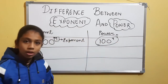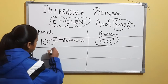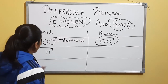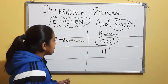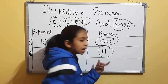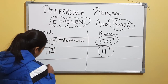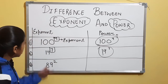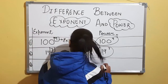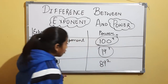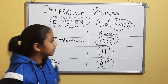Second example: 14 raised to the power 7. What is the exponent? The 7 is the exponent. What is the power? The whole expression is the power. Third example: 89 raised to the power 2. The exponent is 2, and the whole expression 89 raised to the power 2 is the power.